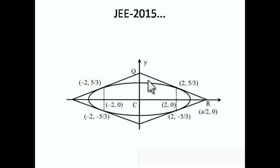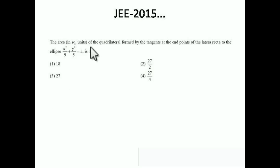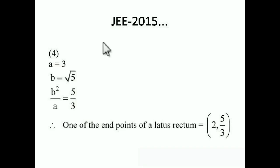First, we need to find the equation of the tangent line, and then we can find the area. We have the ellipse x²/9 + y²/5 = 1, so a = 3 and b = √5. This means the major axis is along the x-axis.